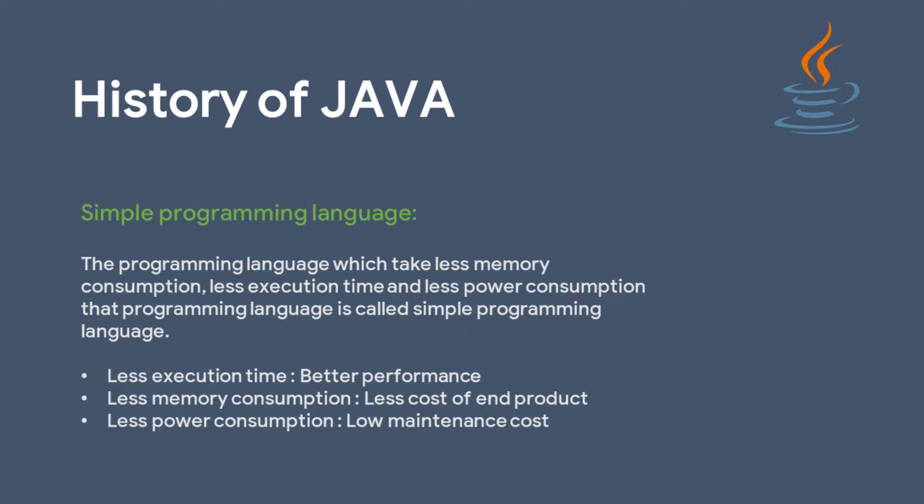What does 'simple programming language' mean? The definition is: a programming language that takes less memory consumption, less execution time to execute the program, and less power consumption — then that programming language is called a simple programming language.